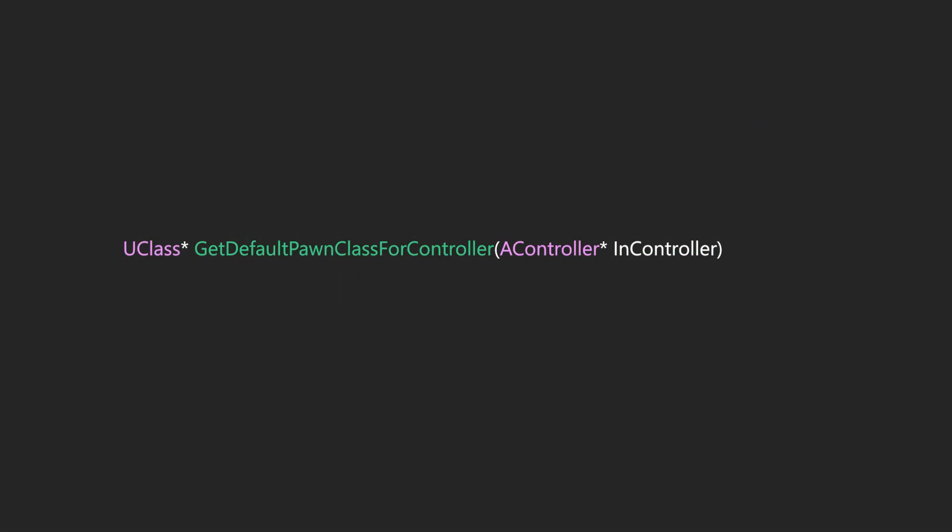This function takes in a controller and returns a new class - our actor. This is where the controller, when it's created, asks what pawn it should spawn. What we would really want to do is override this function in our own game mode class. At first glance the function declaration is not virtual, which means we can't directly override it - which is a shame. When people try to implement this feature, this is a hurdle that comes up. In previous versions of Unreal this was a virtual function and then it was removed around 4.18. A lot of people felt it broke their games, but it really didn't.